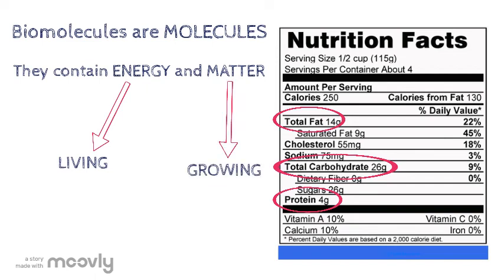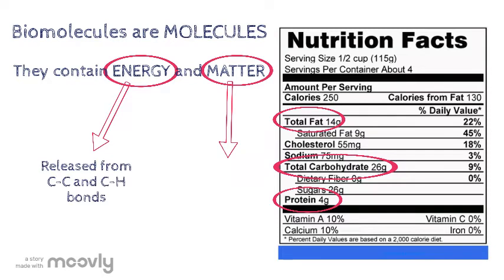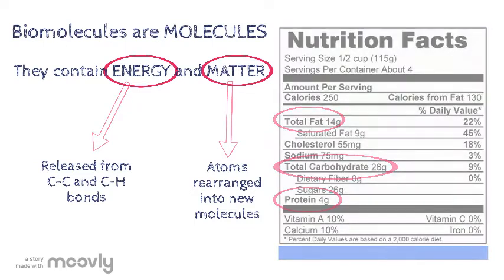Carbohydrates, lipids, and proteins are important because these molecules all contain energy and atoms. When eaten, the energy can be released from the bonds of these molecules, and the atoms can be used to make new molecules that the cells need to grow.